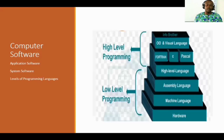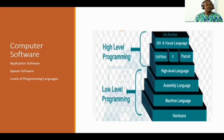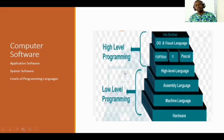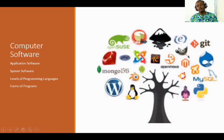We are also going to be looking at the levels of programming language — at what level you interact with the system. Because the system does not understand plain English or plain text. What the system really understands is ones and zeros. Those are the two values it understands. So how do you translate from our world of writing to ones and zeros? And lastly, we will look at the different forms of programs.